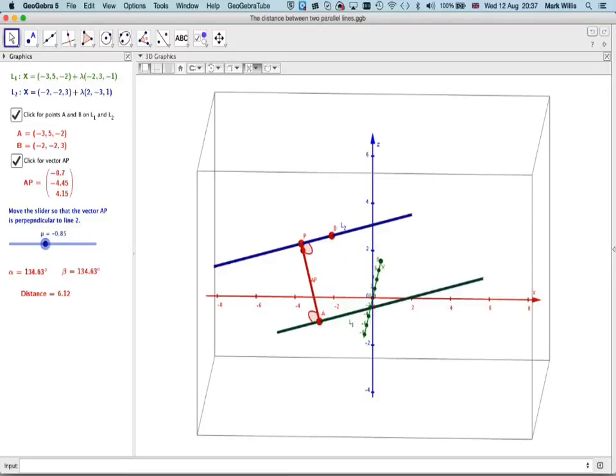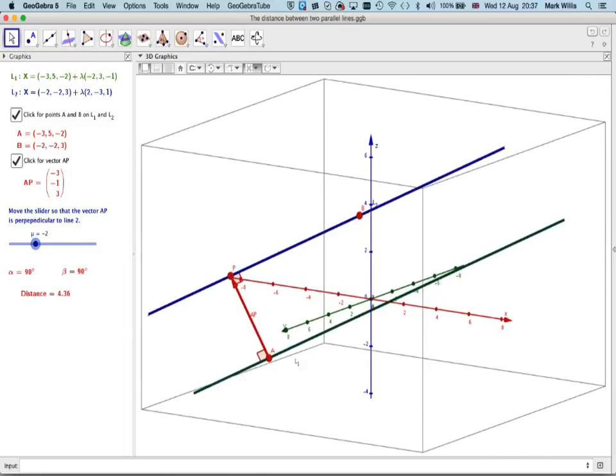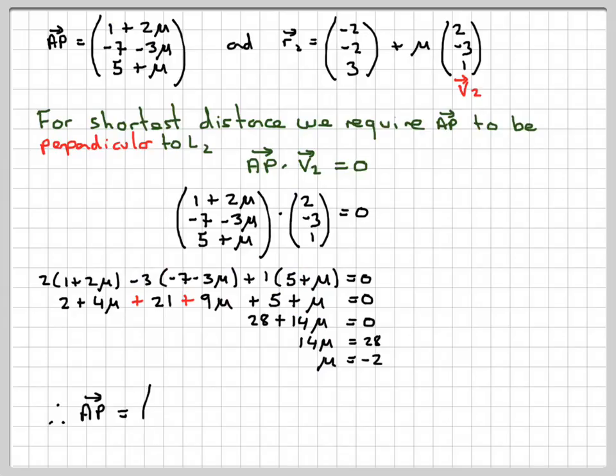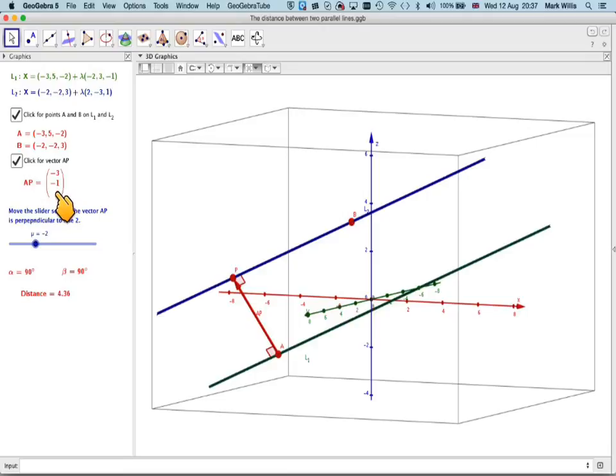We just did that and we found that when mu equals minus 2, we actually can see that we have a vector AP where this is a right angle and this is also a right angle. Therefore, all we need to do is find that vector and then find its magnitude.